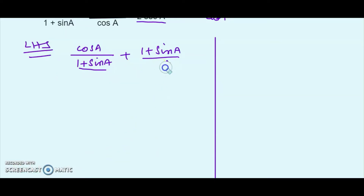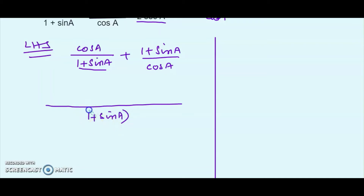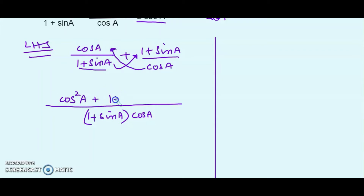The two denominators on the left are (1 + sin A) and cos A, so the LCM is (1 + sin A) · cos A. Taking the LCM: multiply cos A by cos A in the numerator, and (1 + sin A) by (1 + sin A) in the numerator. The numerator becomes cos²A + (1 + sin A)², all over the combined denominator (1 + sin A) · cos A.